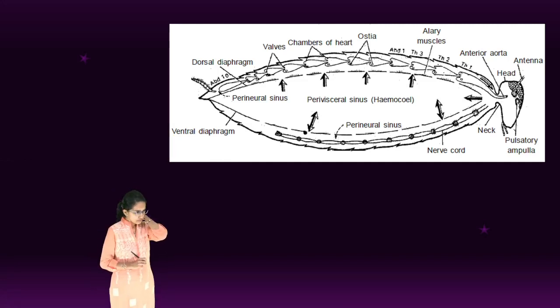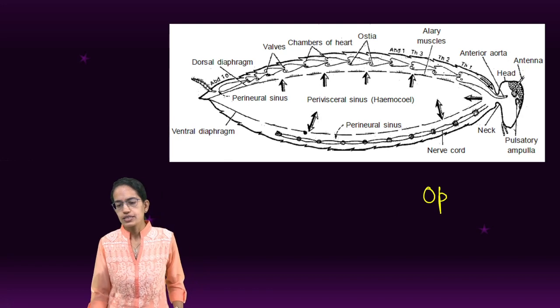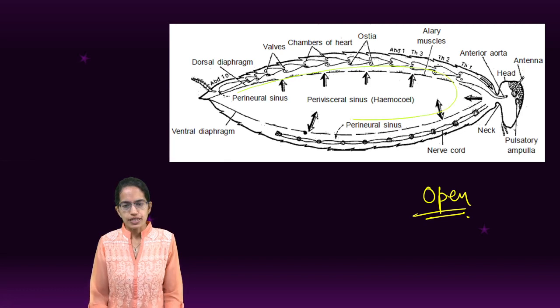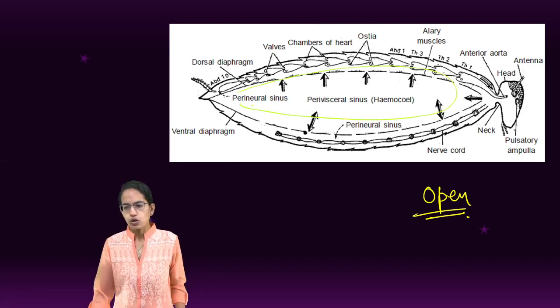Coming on to the circulatory system. Circulatory system is considered as an open circulatory system. That means blood flows throughout the cavity. Throughout the cavity, the blood flows and this consists of heart.